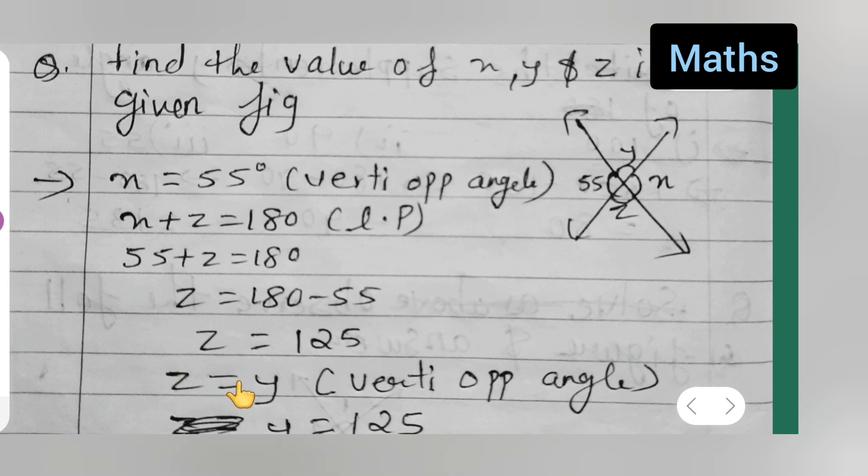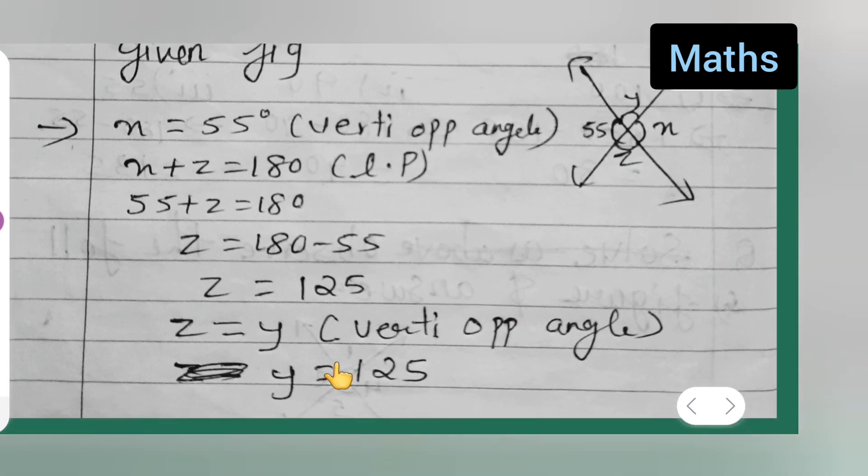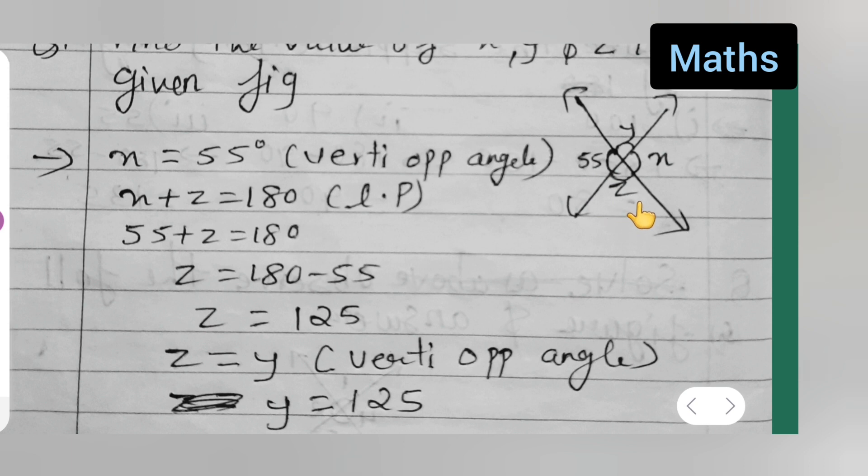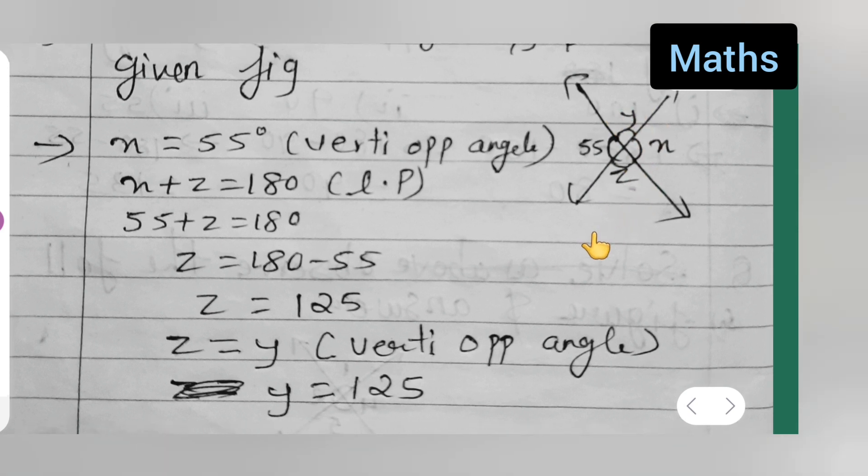Now from this, z is equal to y. We got the value of z, so z is equal to y. Why? Because vertically opposite angles are equal. So y is equal to 125. So here the answer is 125, here also 125.